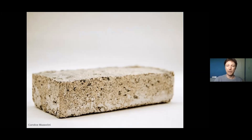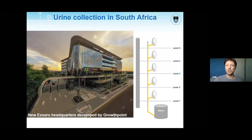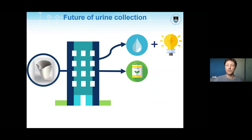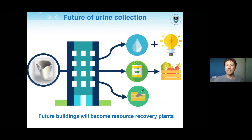This is a picture of the biobrick we produced. We're also looking at urine collection in the South African context. Our work led to the first installation of a urine collection system in South Africa, at the New York Zyro headquarters in Gauteng, built by Growth Point Properties. It's a simple system where urine is collected from urinals and stored in the basement for subsequent use as fertilizer for nearby sports fields. Looking forward, I imagine buildings having unisex urinals that limit water use, potentially produce energy, produce fertilizer for local food production, and even produce building materials — essentially, future buildings will become mini resource recovery plants.